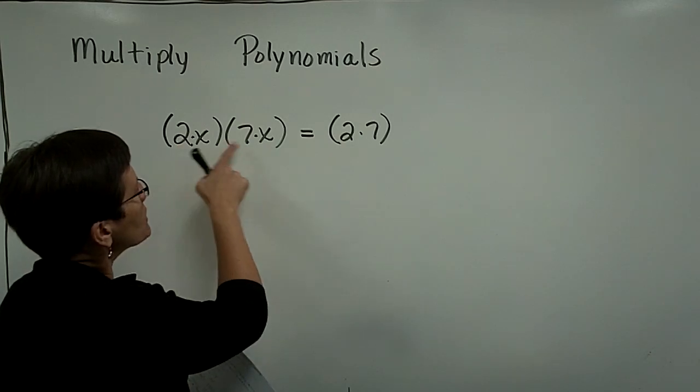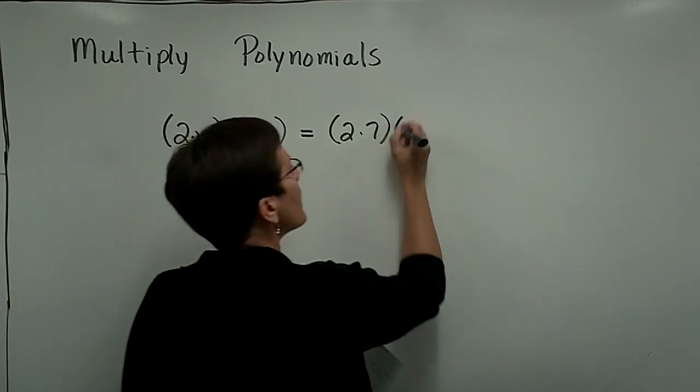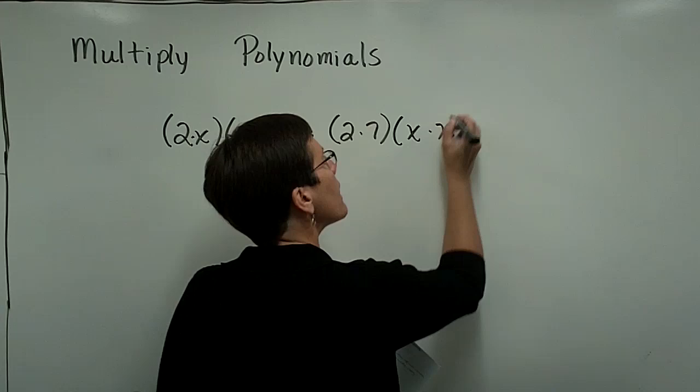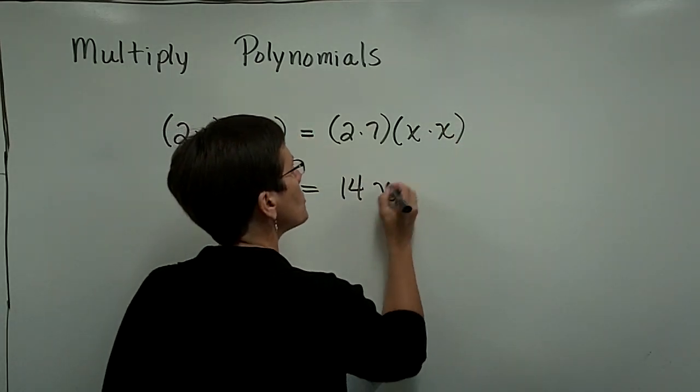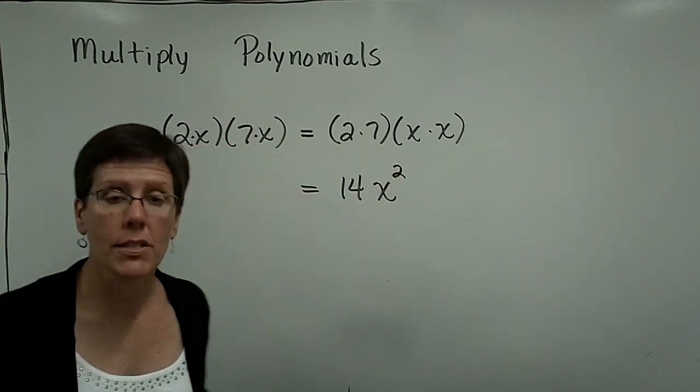Again, any order. I'm choosing to multiply those two. And then the x times the x is x to the second power. So the solution for this, when multiplying those two monomials together, is 14x squared.